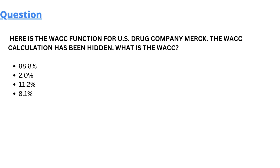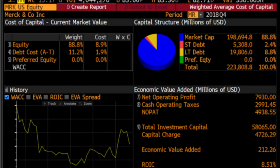The WACC function for a U.S. drug company, Mark, has been given and the WACC calculation has been hidden. We have four options: 8.8%, 2%, 11.2%, and 8.1%. A graph is provided where all of the equity data, debt cost, and preferred equity is given, along with market cap, short-term debt, long-term debt, preferred equity, and total.